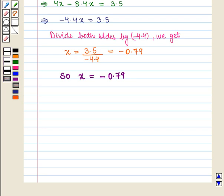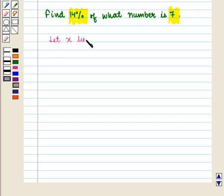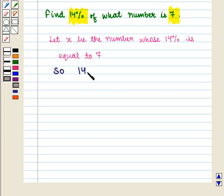Similarly we can solve equations involving percent. Suppose we have to find 14% of what number is 7. Now here let x be the number whose 14% is equal to 7. So we write 14% of x is equal to 7. This implies 14/100 × x = 7. Now this is an equation in first degree.